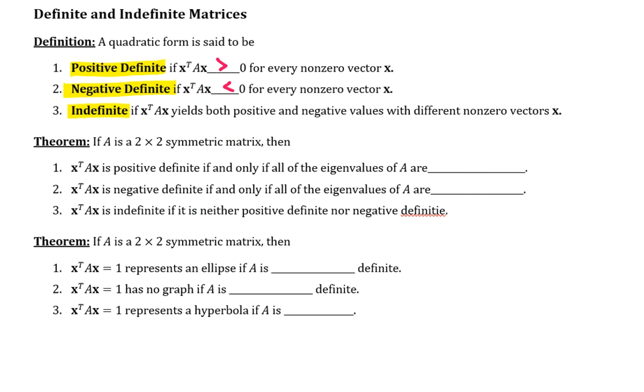Alright, so what does this all mean? Why is it relevant? Well, let's talk about the first theorem. If A is a two by two symmetric matrix, then X transpose AX is positive definite if and only if all the eigenvalues of A are positive.